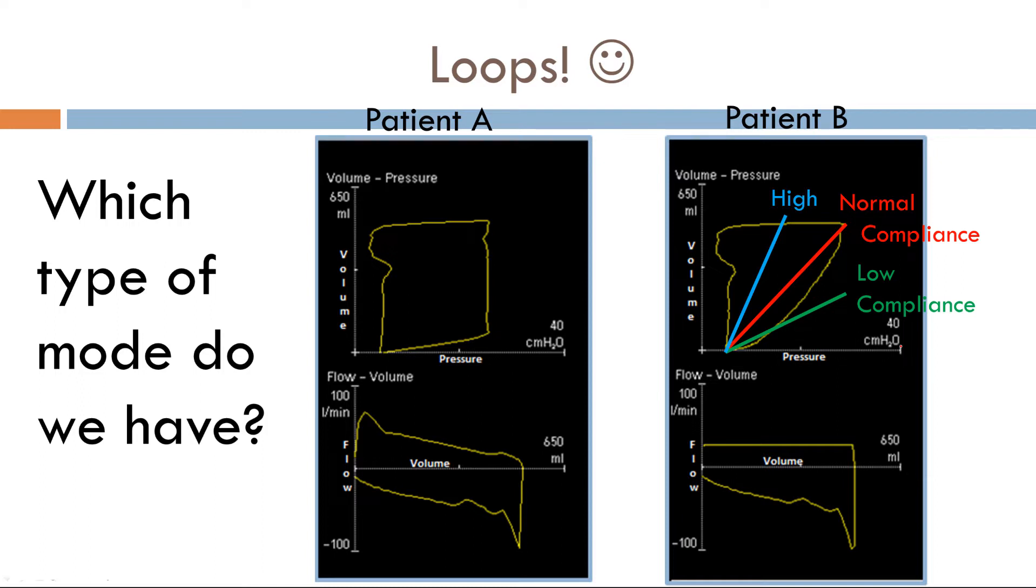What would cause low lung compliance? Large pleural effusion, large pneumonia, atelectasis, pulmonary edema, pulmonary fibrosis, pneumothorax, ARDS. These would be causes of low lung compliance.